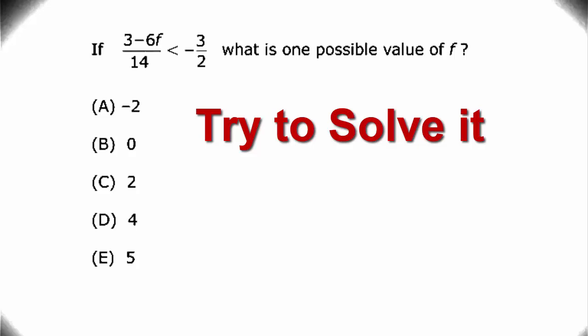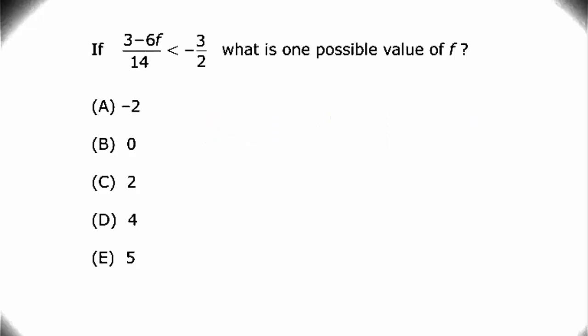Well, in this scenario, we're solving for a possible value for f. Which means that there might be more than one value. And since we see that there is an inequality, there will be more than one value for f. So let's simplify the inequality we have. 3 minus 6f divided by 14 is less than negative 3 halves.